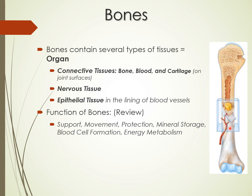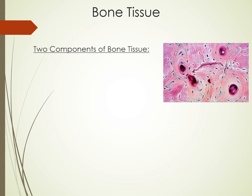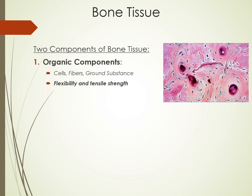The functions of bones include support, protection, and allowing movement — muscles move our bones. Bones also store minerals, especially calcium, which is why there's constant turnover. We also create all our blood cells in the bone marrow — red blood cells and white blood cells are all produced inside the bone. Additionally, bones store fat in yellow bone marrow, which helps with energy metabolism.